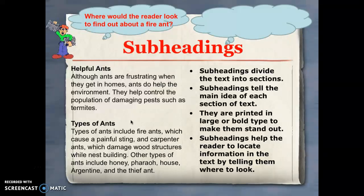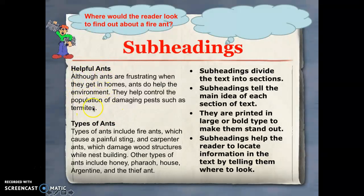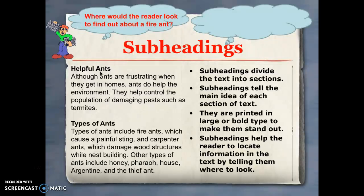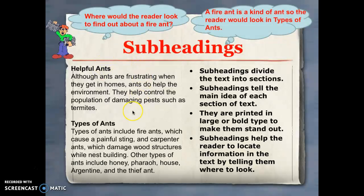The next type of text feature is a subheading. Subheadings are different headings that divide text into different sections. If you've ever seen a text that's chunked out into different paragraphs, you might see a subheading on top of that paragraph explaining what you are going to be reading about. This helps the reader locate information more quickly than having to skim through a whole article. For example, if we were looking for information about a fire ant, we would look under the subheading 'Types of Ants' to find that information.